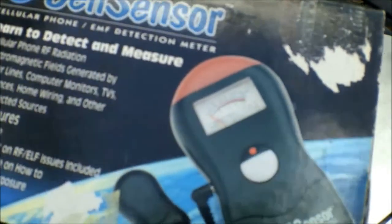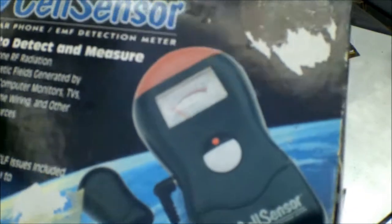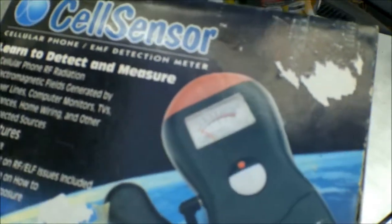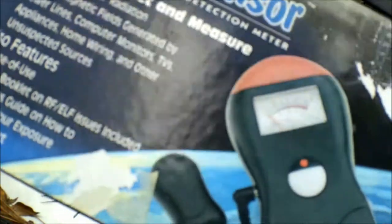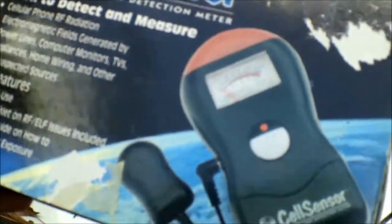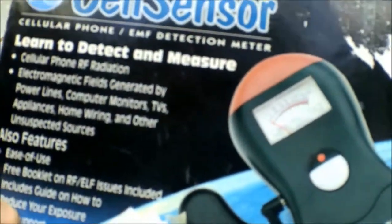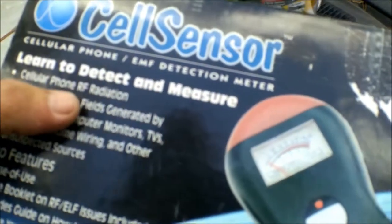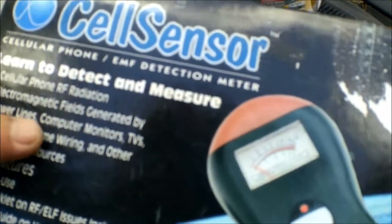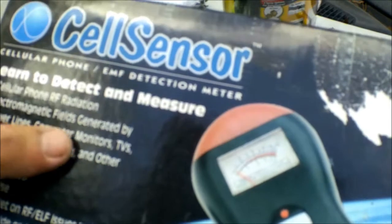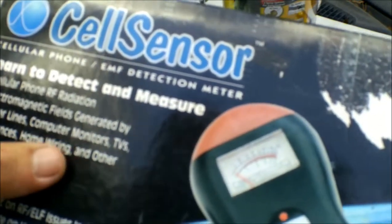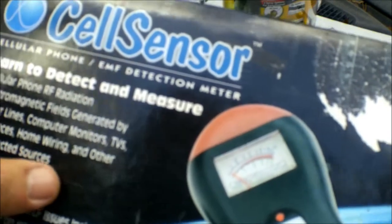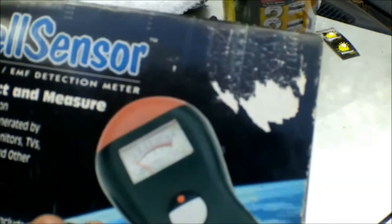Looking for if there's something transmitting around and making my other equipment act up or something, I can check for cell phone RF radiation, electronic electromagnetic fields generated by power lines, computer monitors, TVs, appliances, home wiring, and other unsuspected sources.